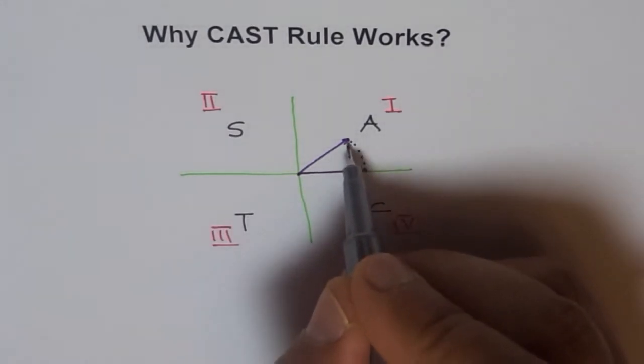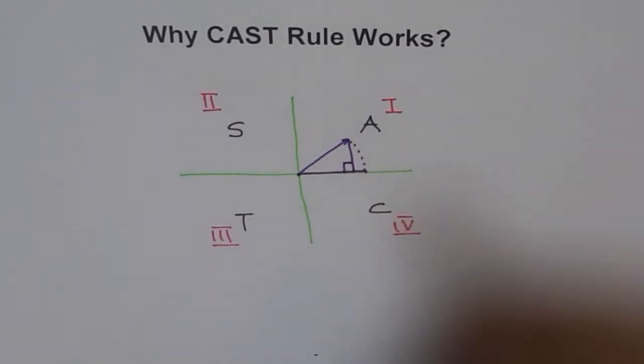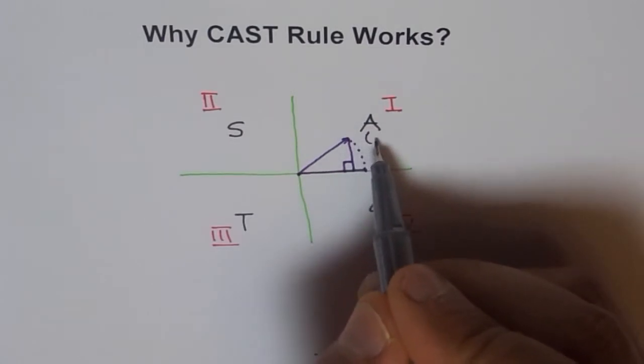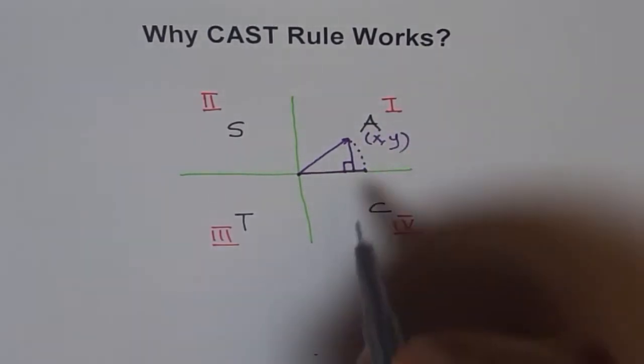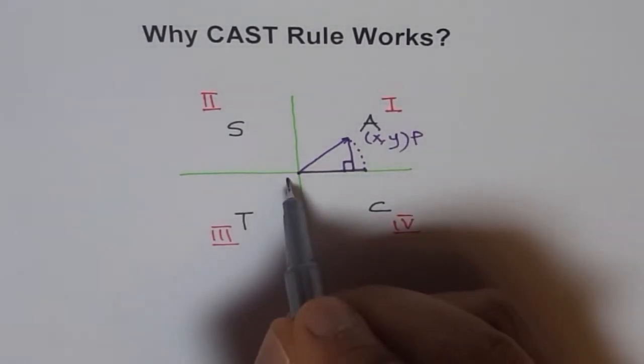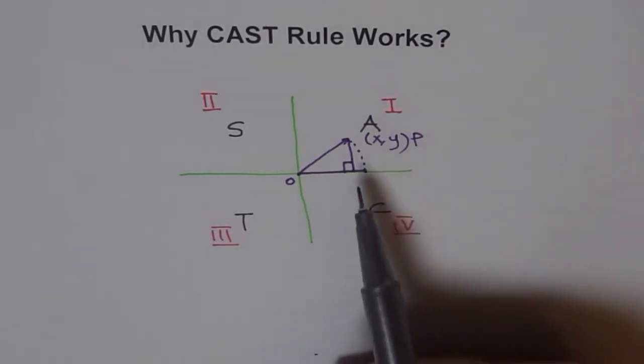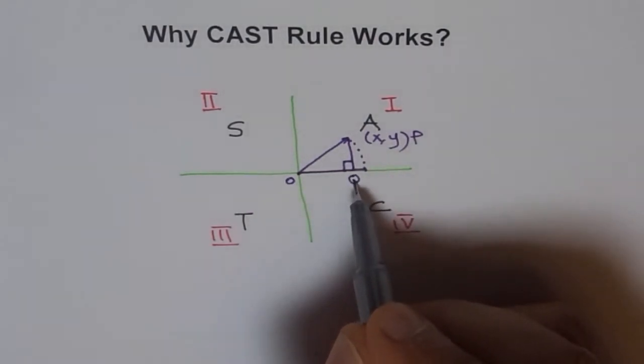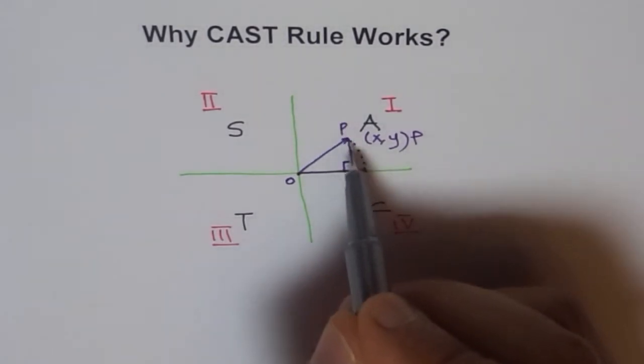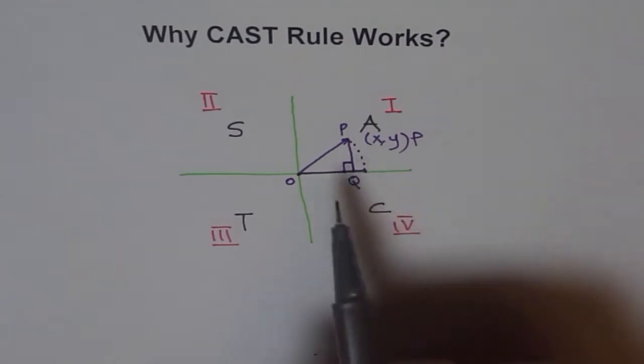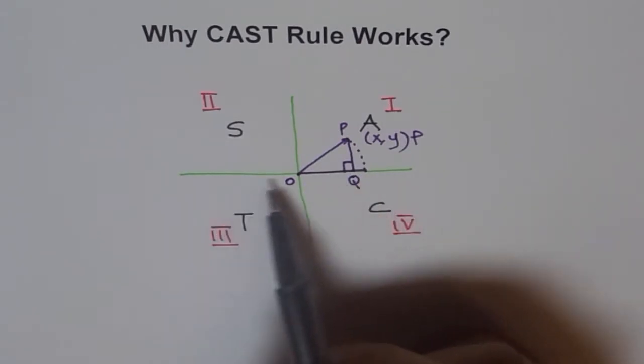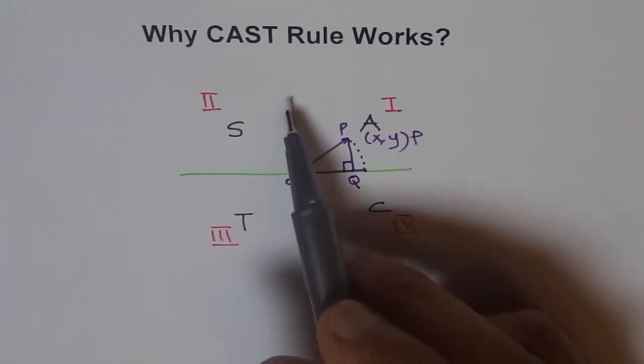Now when the terminal arm is here, we can drop a perpendicular from here and form a right-angled triangle. At this position, let us say that the coordinates of my points in quadrant 1 are x, y. Let's say this is my point P, and that's my origin O. Now here, x is horizontal, this much of distance, right? Let me call this perpendicular as Q and P is my point here. That's my triangle, the right triangle.